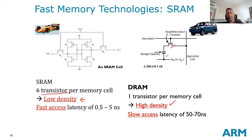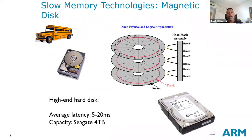The access time for DRAM is a lot slower — 0.5 to 5 nanoseconds for SRAM versus 50 to 70 nanoseconds for DRAM, more than 10 times slower. You also have your main storage such as hard disk drive or SSD. Even though SSDs are fast, they are still considerably slower than SRAM or DRAM used as main memory.